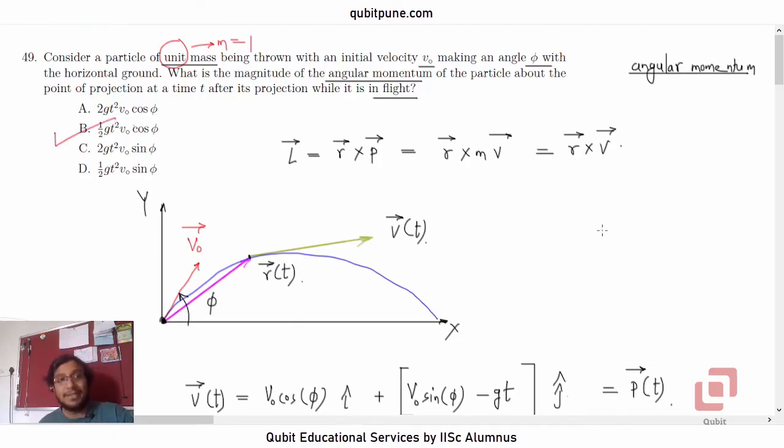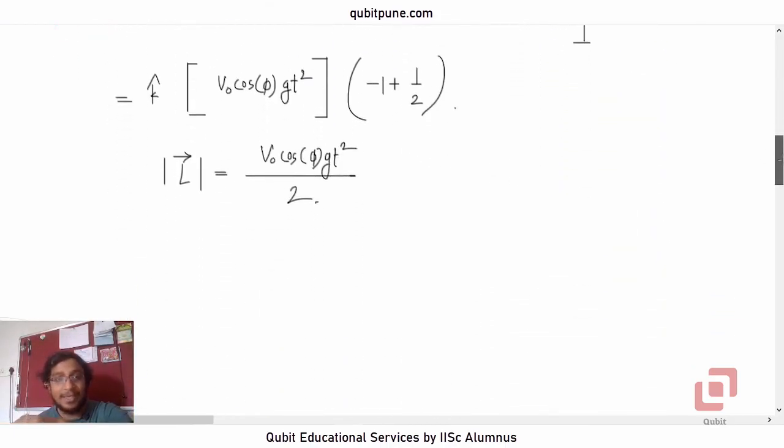And interestingly enough, the magnitude of the angular momentum is also parabolic or the square function of the time. So if you plot angular momentum against time, it will also be a parabolic curve.